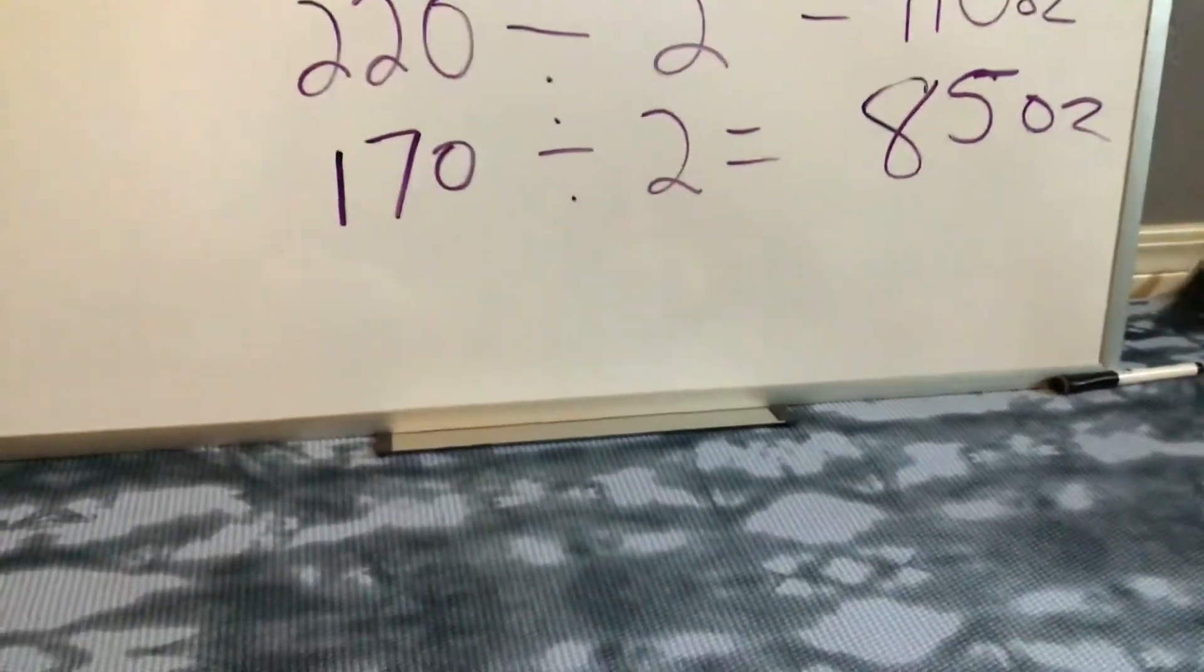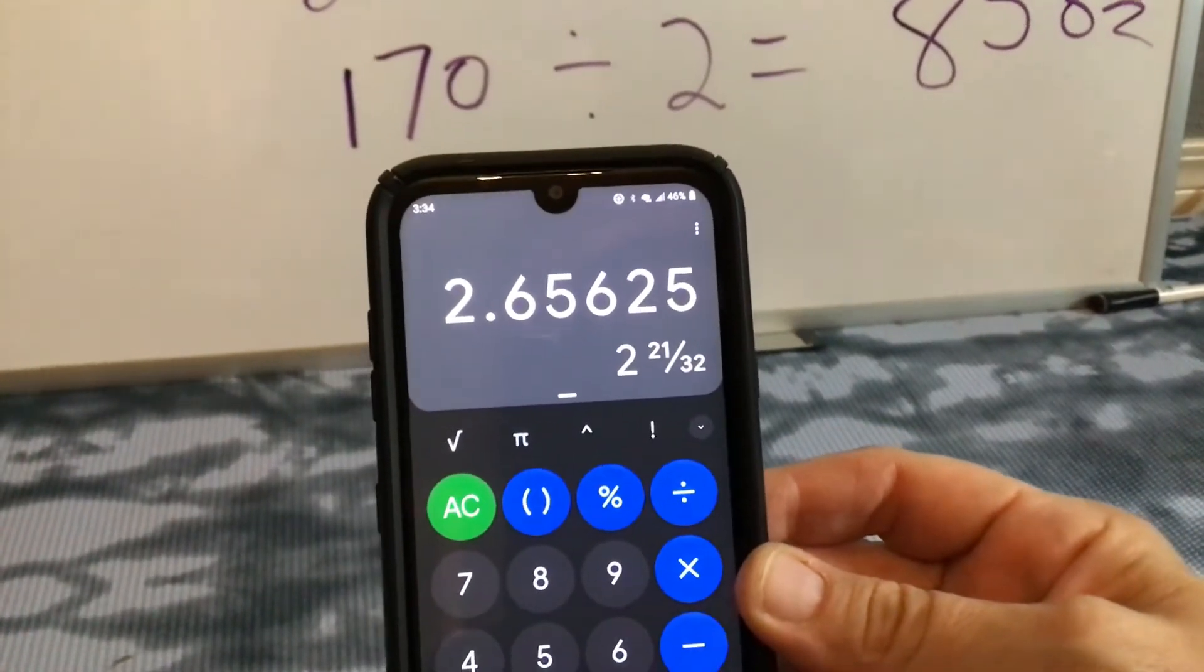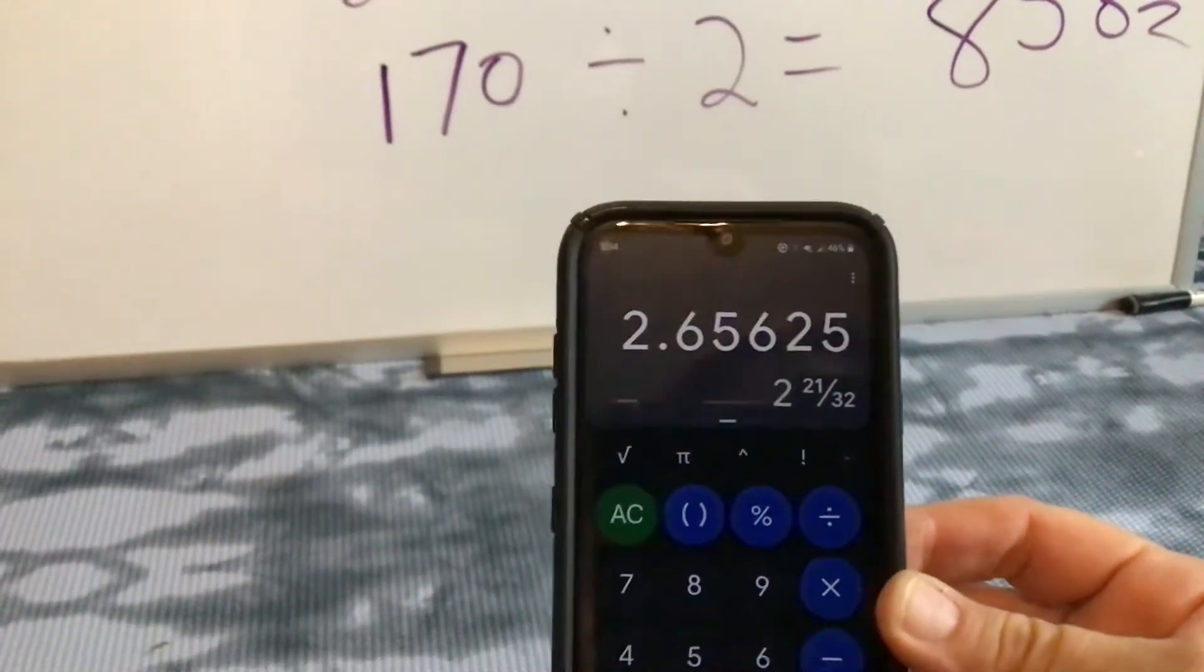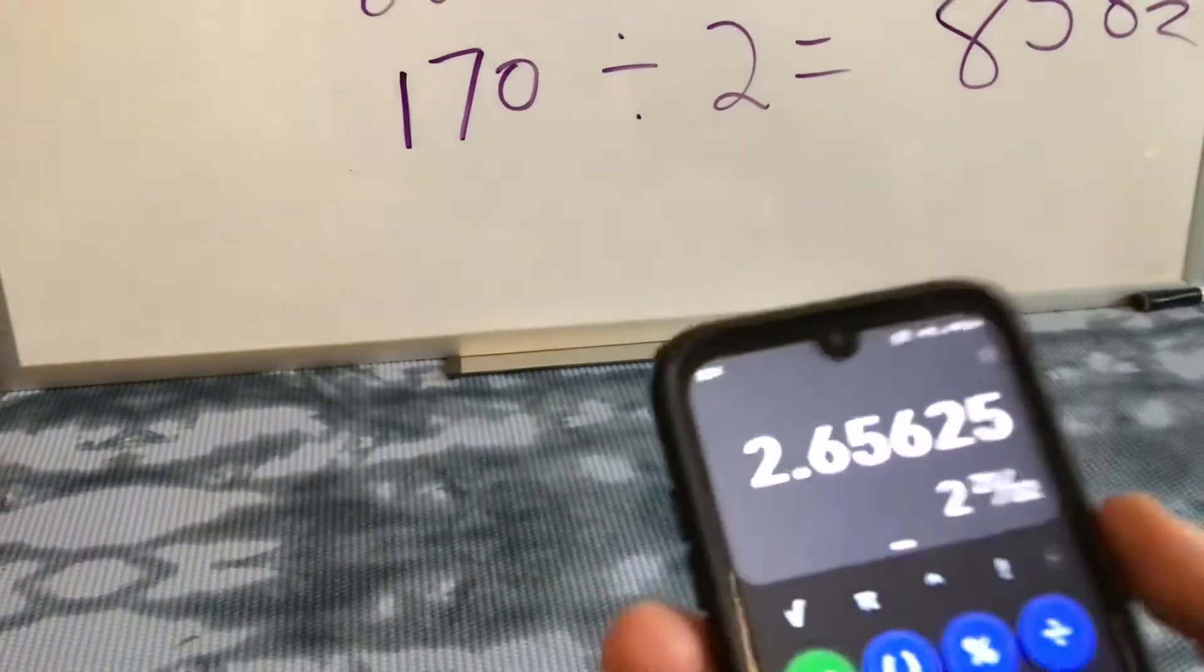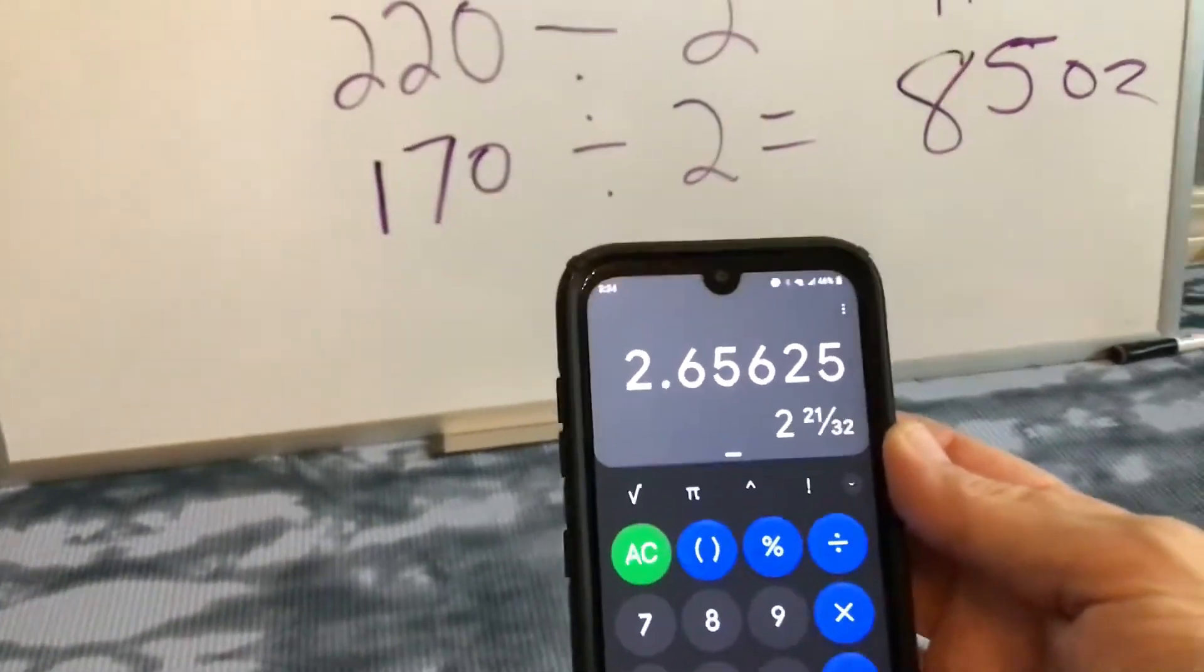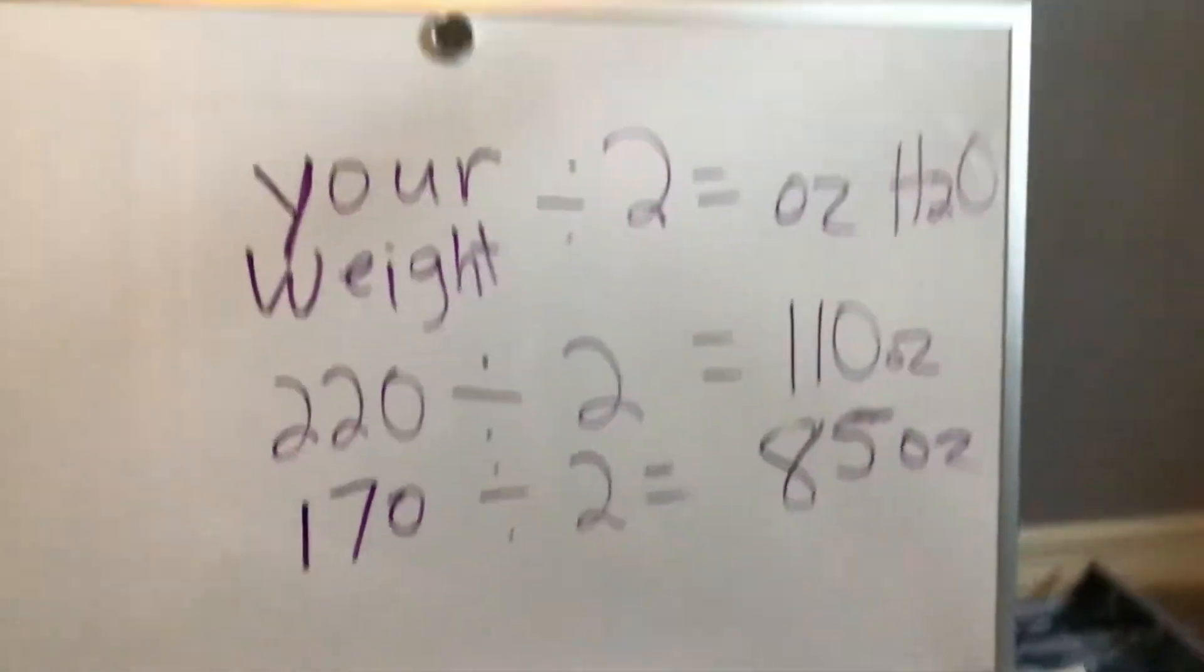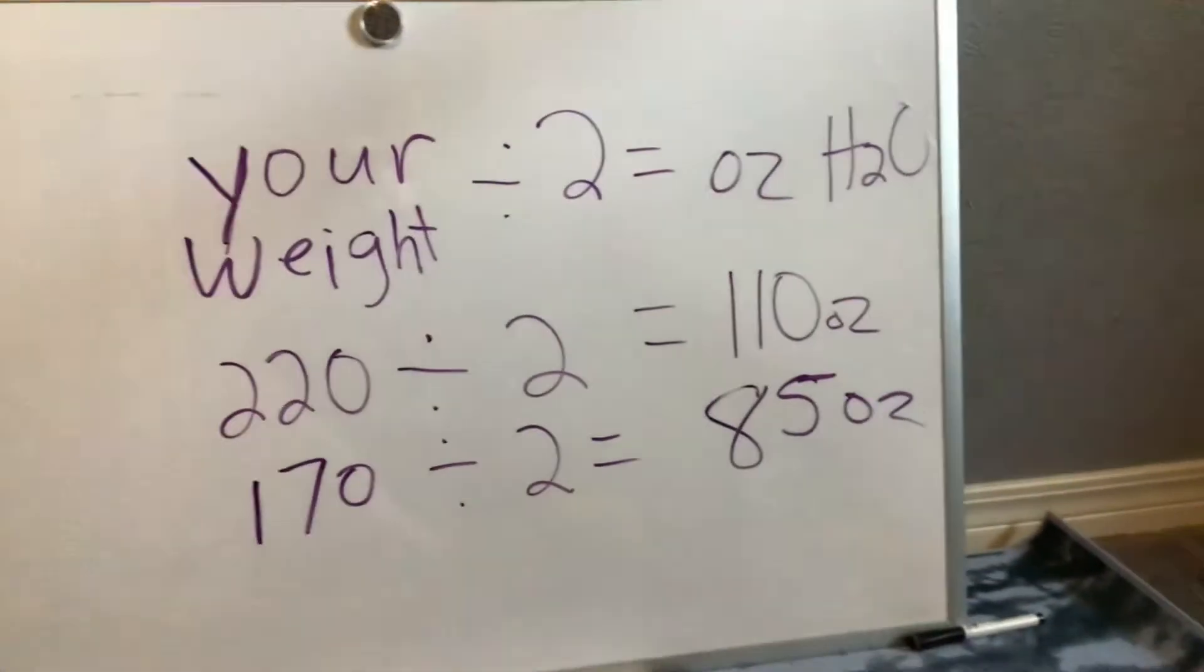And it says 2.65, or 2.1, 2.32. That's more than half of another cup, so less than three cups of my 32 ounce cups per day is how many I should be drinking per day. Less than three cups, or rounding it up to three cups is a good idea.